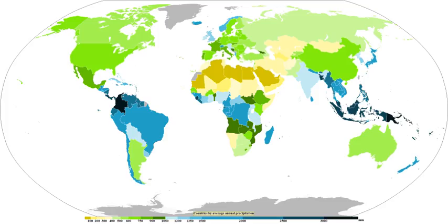Convective rain, or showery precipitation, occurs from convective clouds, e.g., cumulonimbus or cumulus congestus. It falls as showers with rapidly changing intensity. Convective precipitation falls over a certain area for a relatively short time, as convective clouds have limited horizontal extent. Most precipitation in the tropics appears to be convective; however, it has been suggested that stratiform precipitation also occurs. Graupel and hail indicate convection. In mid-latitudes, convective precipitation is intermittent and often associated with baroclinic boundaries such as cold fronts, squall lines, and warm fronts.